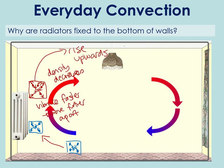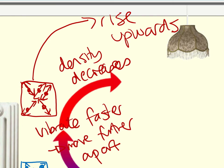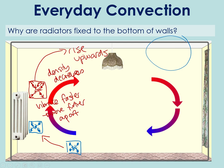Over here somewhere, the particles are not near the radiator anymore, so they will cool back down and fall back down to the bottom. That's why radiators are at the bottom of the wall.